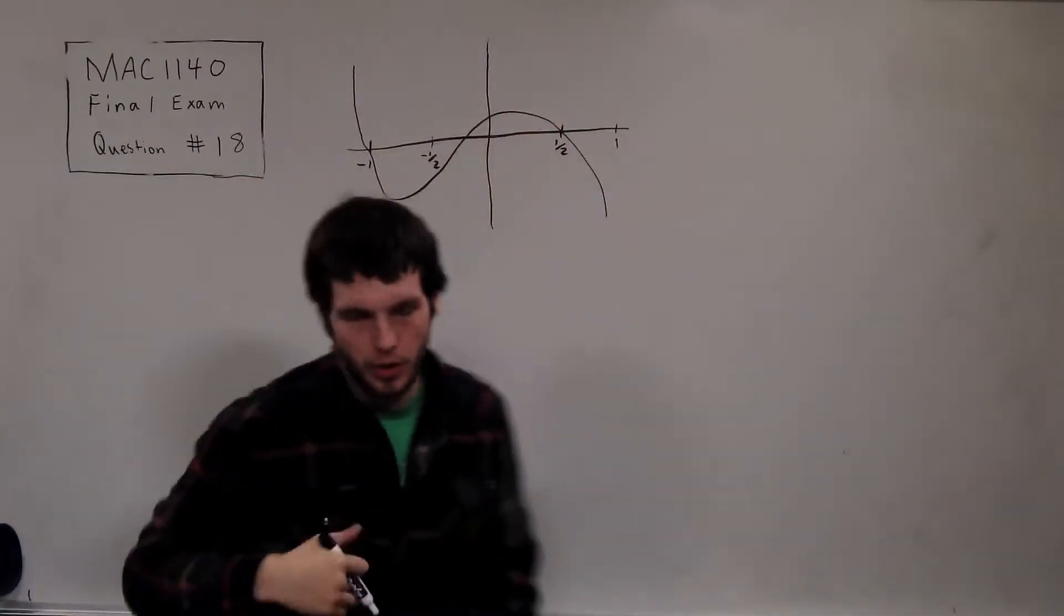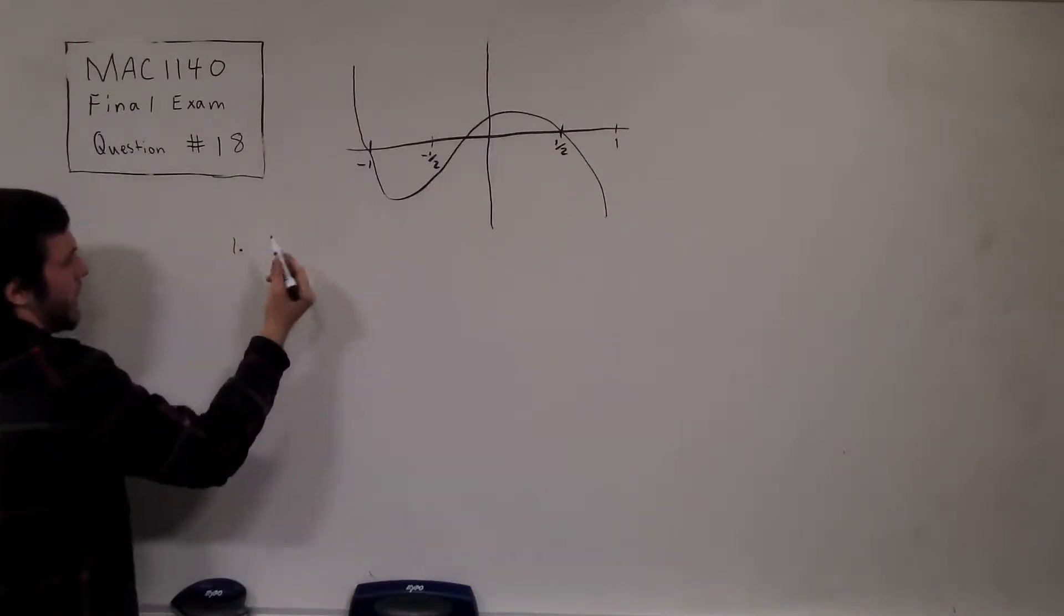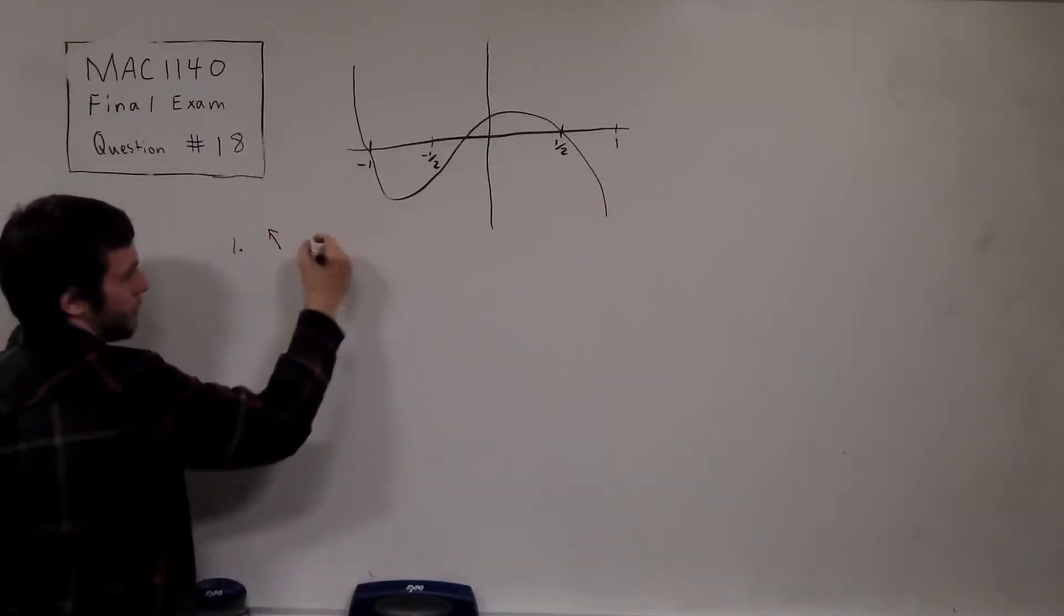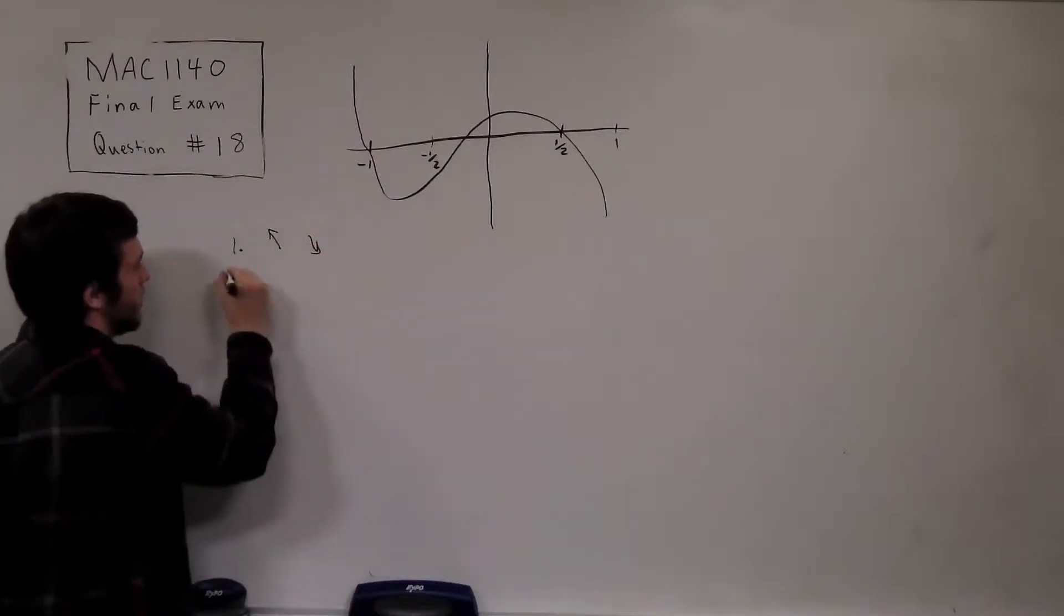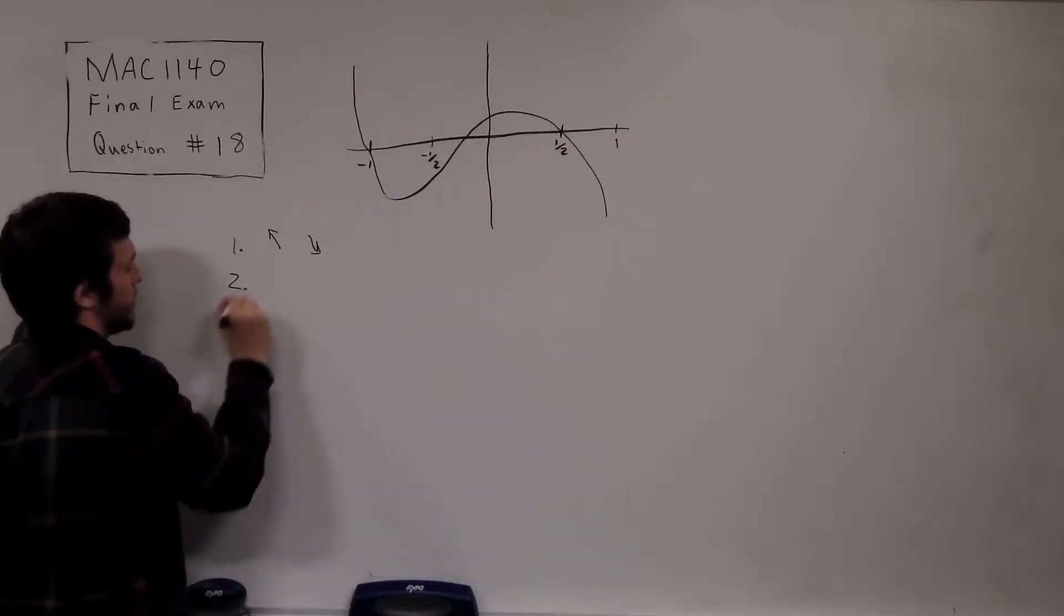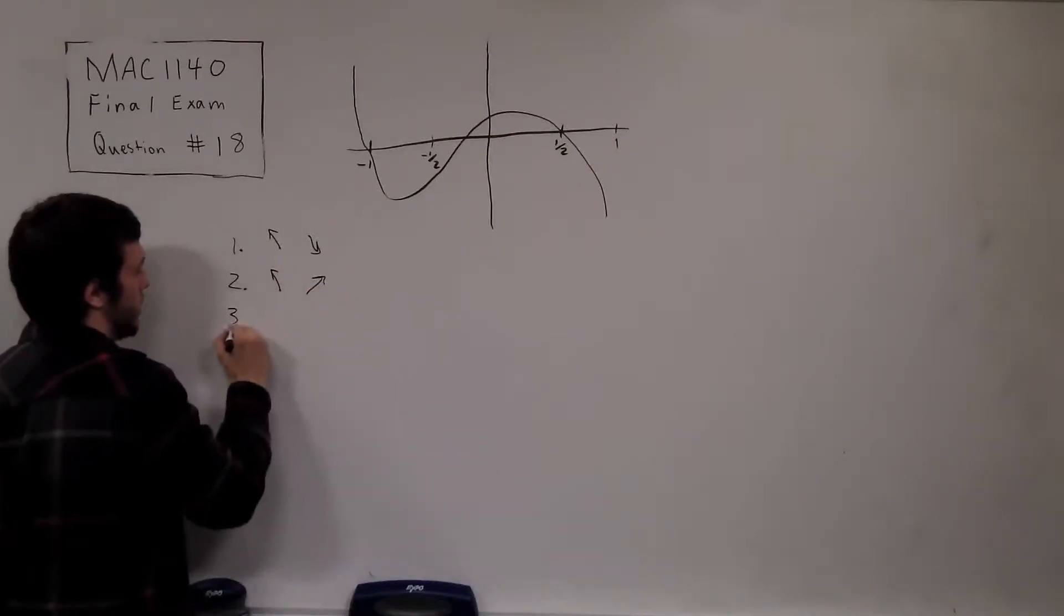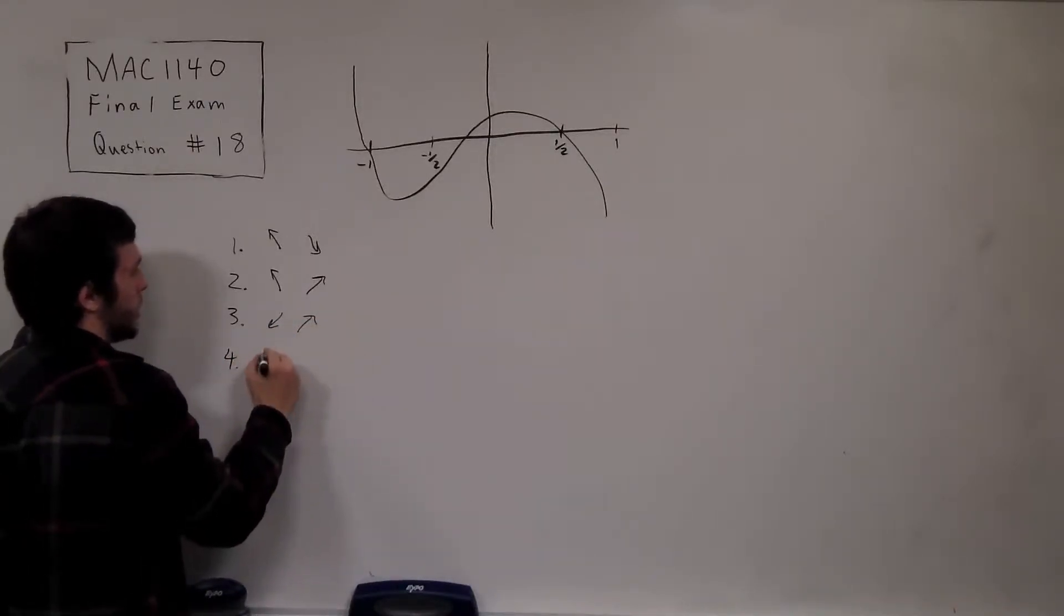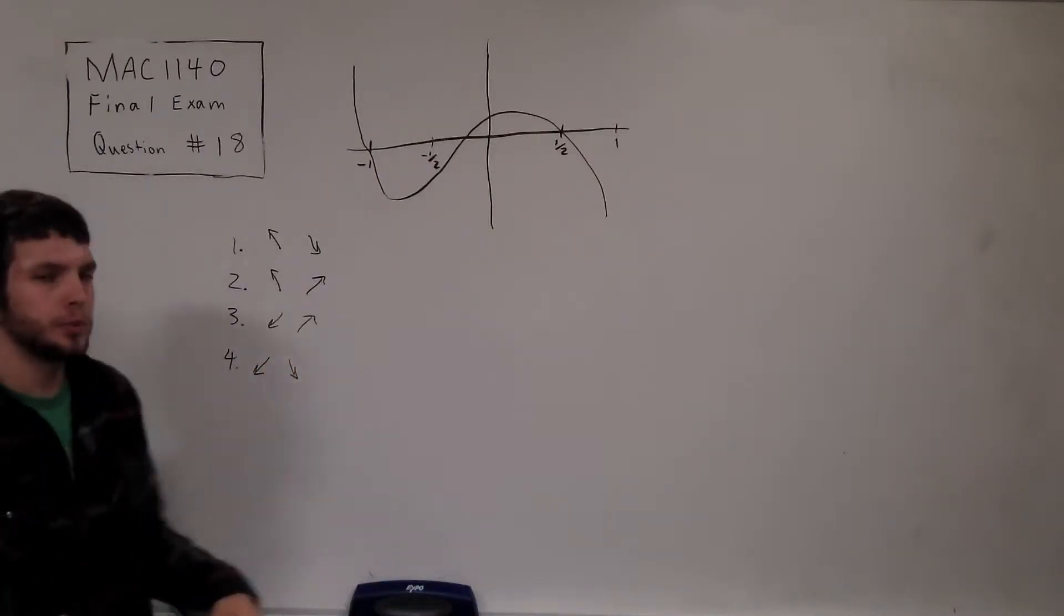And there are really only four possible cases. So one case is that the polynomial goes up to the left like this and then goes down to the right, which is the case corresponding to what we have. And there's a case where the polynomial can go up to the left but also up to the right. There's the case where the polynomial can go down to the left and up to the right. And the case where the polynomial can go down to the left and down to the right. There's only four possible combinations here.